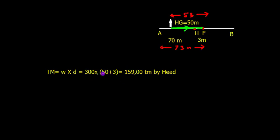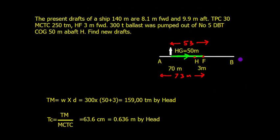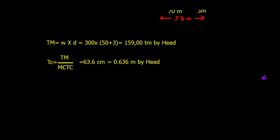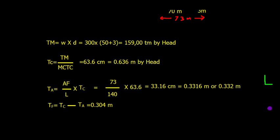The trimming moment is W times D, which is 300 times (50 plus 3), giving 15,900 ton-meters by head. Why by head? Because I'm shifting this weight forward. Now trim change equals trimming moment divided by MCTC, so 15,900 divided by 250 equals 63.6 centimeters or 0.636 meters by head.